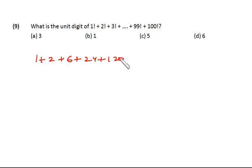5 factorial is 120 and so on. So from 5 factorial onwards we are getting the unit digit as 0, so doesn't matter how many numbers are there after it, all of them will have the unit digit as 0.